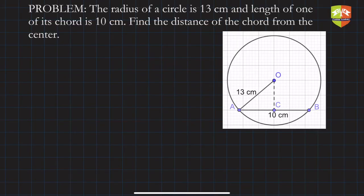Hello friends, we have taken a problem here to solve with the theorems we learned in the previous videos. Let us solve this problem. The question says the radius of a circle is 13 centimeters and one of its chords is 10 centimeters. We have to find the distance of the chord from the center.